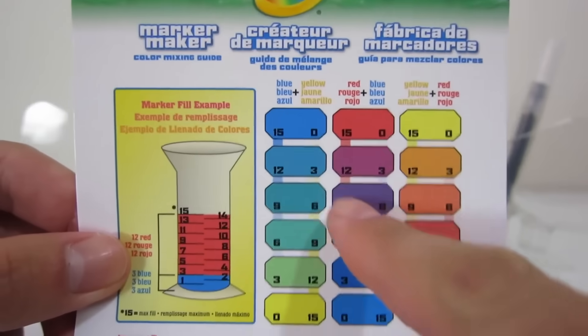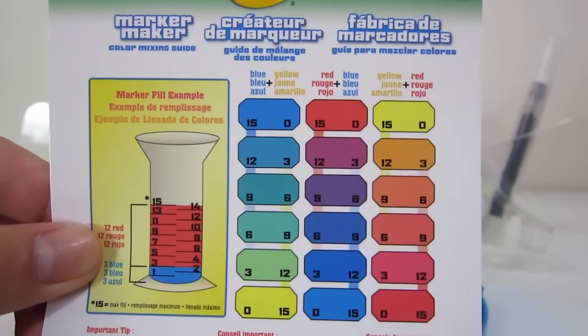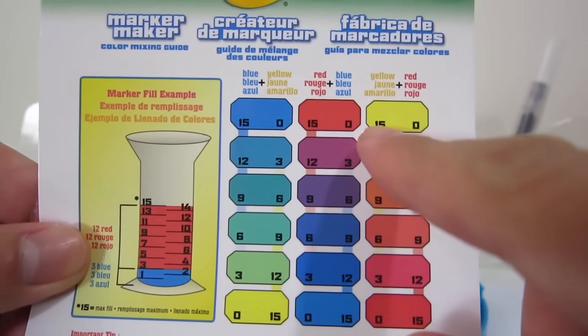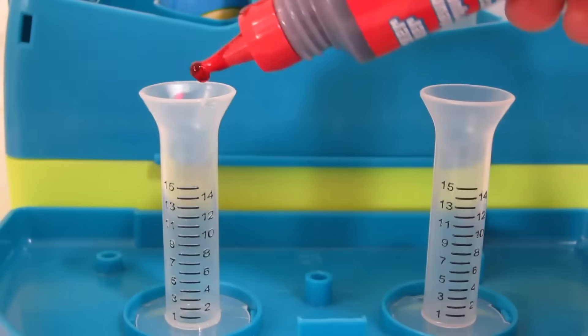Now let's make some more colors. We'll make purple. This is 12 red and 3 blue. Let's also make yellow. This is just 15 parts yellow. Let's start with the purple one.